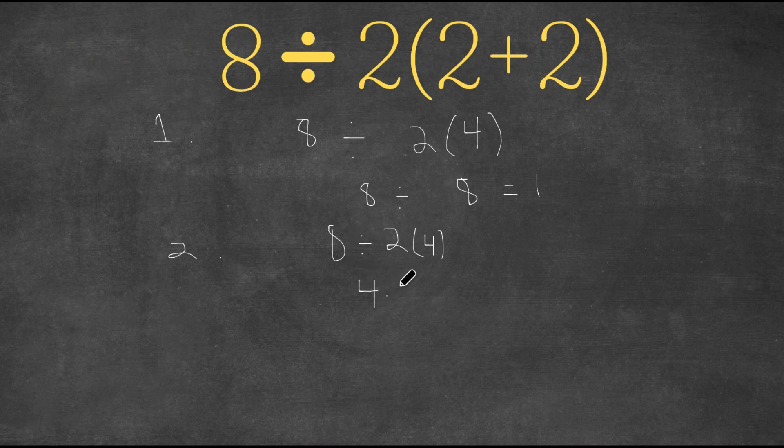So then we would do 4 times 4. And this would give us 16. So 16 and 1 were the answers that caused a whole argument.